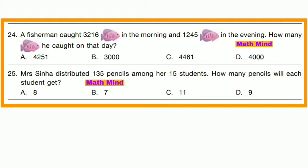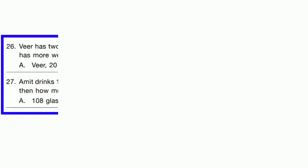Question No. 25: Mrs. Sina distributed 135 pencils among 15 students. How many pencils will each student get? 135 ÷ 15 = 9. We can verify: 15 × 9 = 135. Option D is correct.